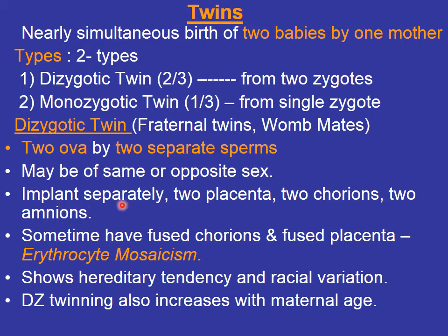Dizygotic twins usually implant separately, so they have two placentas, two chorions, and two amnions — meaning they have their own membranes. Sometimes the chorions are so close to each other that they get fused, so the developing babies have fused chorions and a fused placenta.